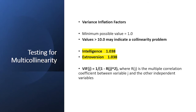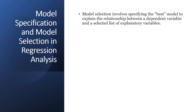Regarding multicollinearity, recall that VIF values approaching or exceeding 10 indicate a problem. In this example, the VIF for both intelligence and extroversion is 1.038 — very far from 10. We therefore cannot say there is multicollinearity in this model, and we proceed with the assumption of no multicollinearity.